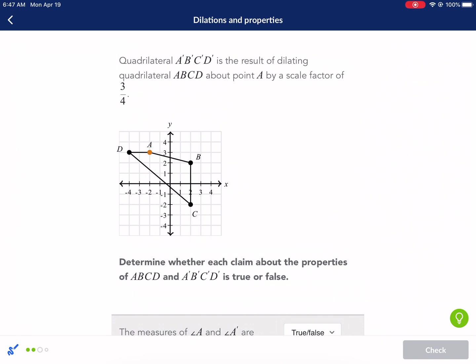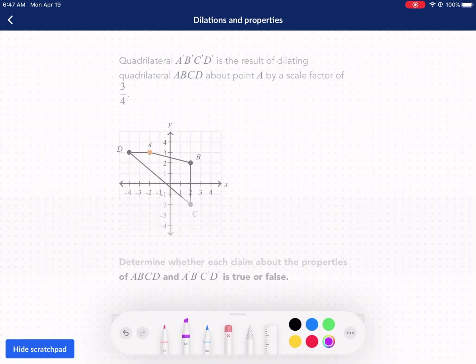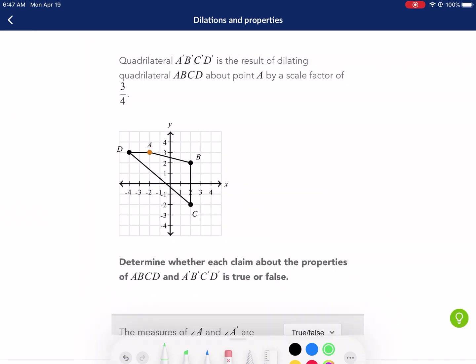Next question. Quadrilateral ABCD prime is the result of dilating ABCD about point by a scale factor of 3 over 4. This is what we were just talking about. We're going to shrink here, because this is a number that is less than 1. Therefore, it is going to contract. It is going to shrink. It is going to get smaller. It's going to be 75% of the size, because that's 3 over 4.